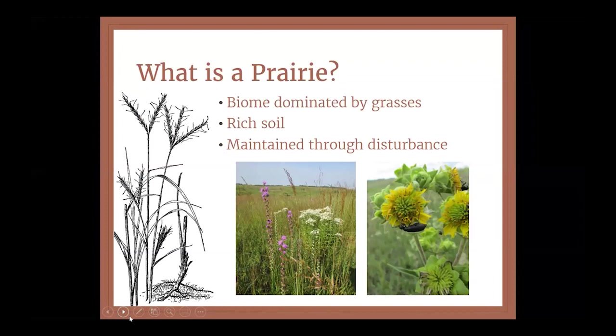Because of the vegetation in a prairie and the way it grows, prairies have developed extremely rich soil that has contributed to the success of agriculture throughout the state. Perhaps the most important characteristic of a prairie for today's talk is that they are maintained through disturbance. This need for disturbance may seem counterintuitive at first, because on the surface it looks like we're harming the prairie to keep it healthy — we're taking away some vegetation from those desirable native species to promote further growth. But as we'll discuss, removing that above-ground vegetation has a whole suite of positive effects.